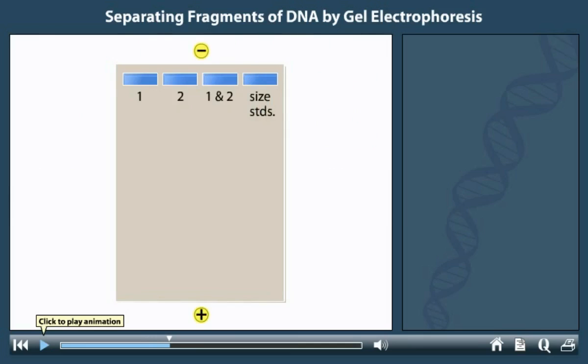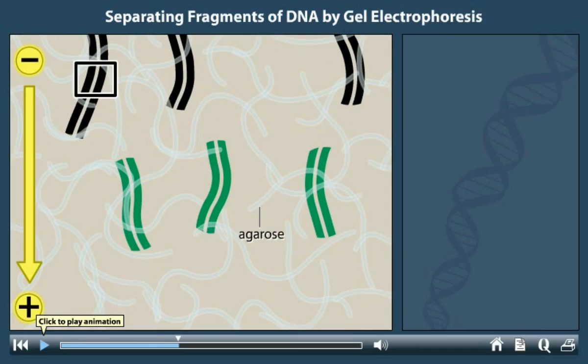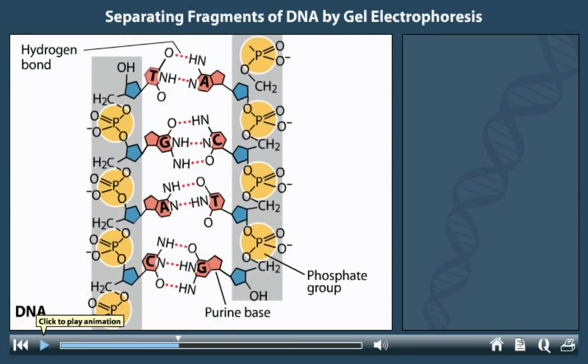The blue tracking dye is negatively charged and migrates toward the positive electrode, as does the DNA. The DNA backbones contain negatively charged phosphate groups, which are attracted to the positive electrode.